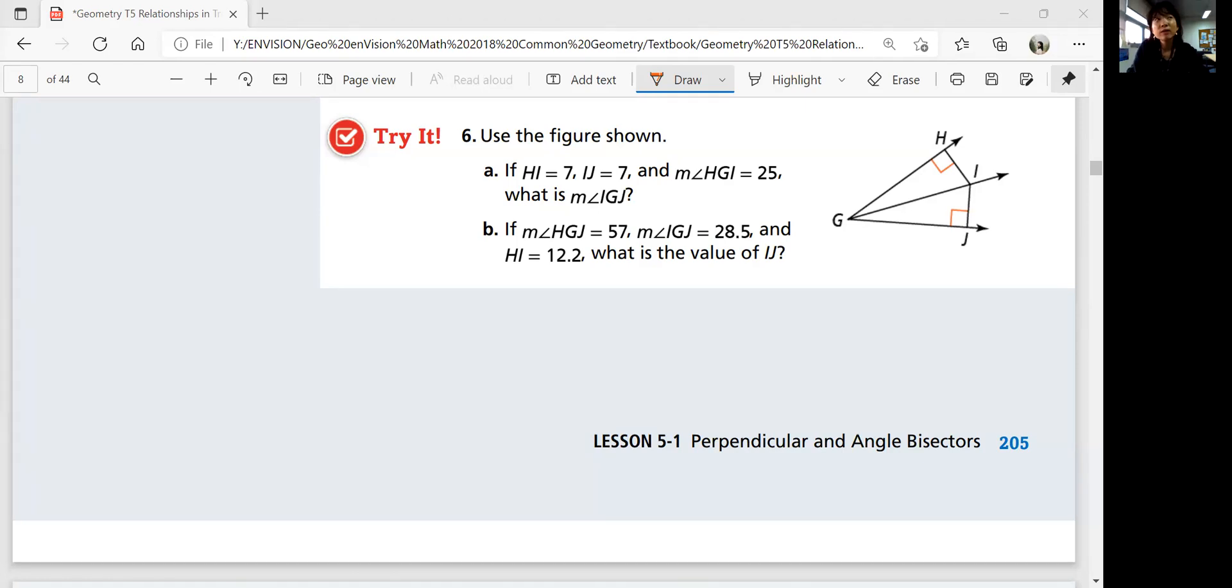Try number 6-A, we know the information that HI and IJ would be equivalent, right? So the angle HGI is 25. Then we know that this is going to be the angle bisector because the distance between HI and IJ are the same. And it's perpendicular, so you know it's going to form right triangles that have corresponding sides that are equivalent, corresponding angles that are equivalent.